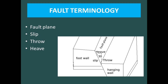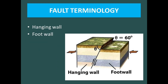The fault plane is the surface along which the relative movement occurs, and this relative movement is called the slip. Throw and heave are also associated with the slip. The vertical component of relative movement is called throw, and the horizontal component is called heave.